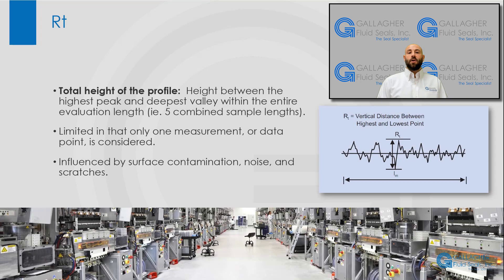Next, we have RT, which is known as the total height of the profile. RT is the absolute vertical distance between the highest peak and the deepest valley within the entire evaluation length, which is typically five consecutive sampling lengths. One thing to note is that the highest peak height and lowest valley depth can be found in different sampling length segments and combined to produce the final RT value. RT is not only limited in that only one measurement or data point is considered, but it is also influenced by scratches, noise, and surface contamination.